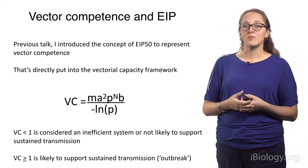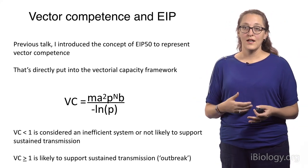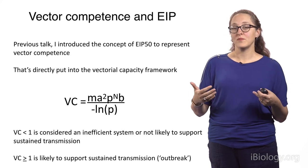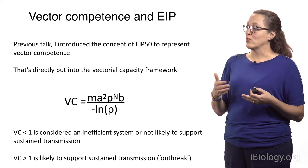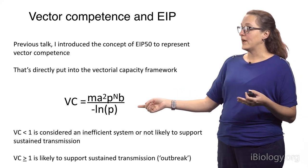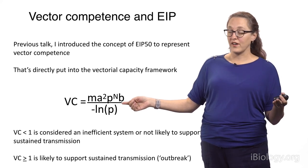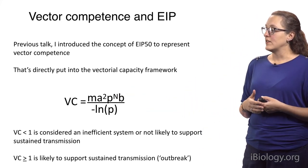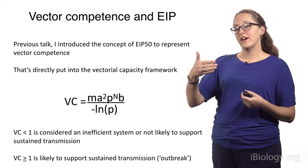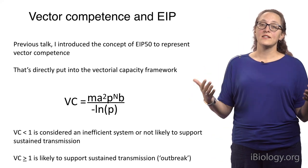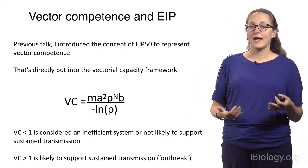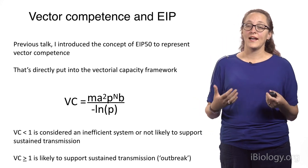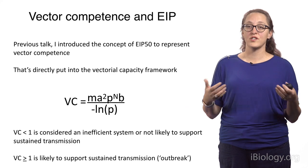In a previous talk, I introduced the concept of EIP50 to represent vector competence. EIP is the extrinsic incubation period, and EIP50 is the time it takes for 50% of the mosquitoes to become infectious, given exposure. We can directly put that into the vectorial capacity framework by setting B equal to 50%, or 0.5, and substituting EIP50 for N. When vectorial capacity is less than 1, this is an inefficient system not likely to support sustained transmission. When vectorial capacity is greater than or equal to 1, this system has the potential to spark an outbreak or sustain transmission.